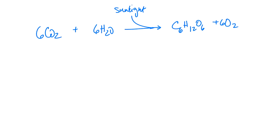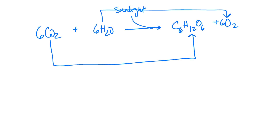This is also a redox reaction, meaning one molecule is getting reduced while another is getting oxidized. CO2 is a carbon-containing molecule, and water is being converted into oxygen gas. Reduction means gain of electrons, or we can follow the hydrogens — gain hydrogens. So carbon dioxide is becoming reduced because it gains hydrogens, while water is losing hydrogens or losing electrons, so it is being oxidized.